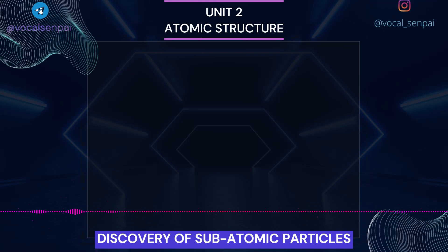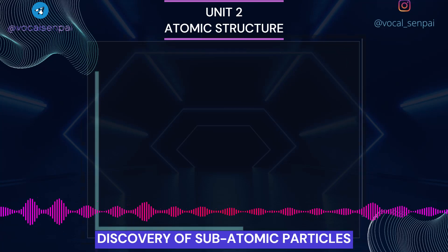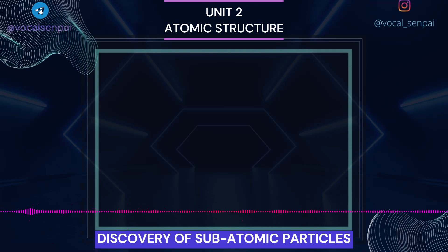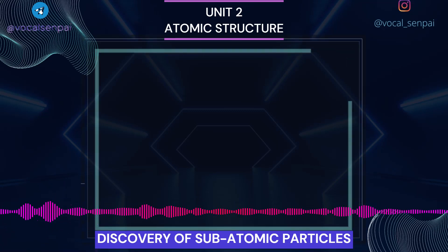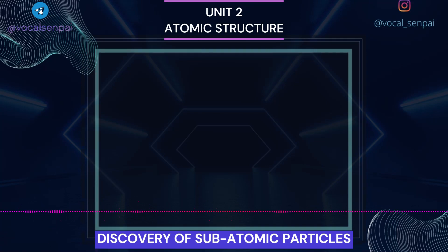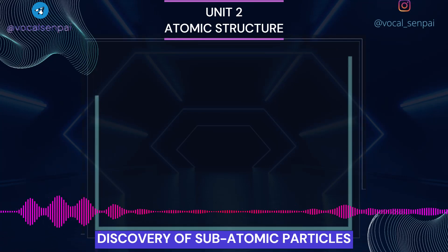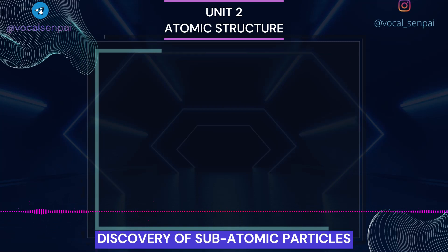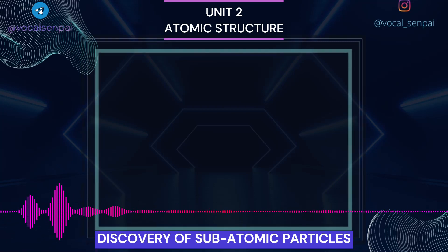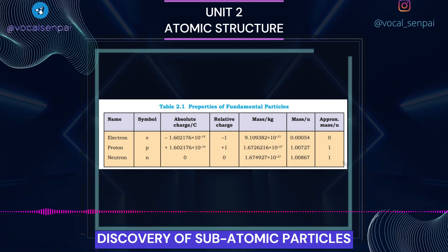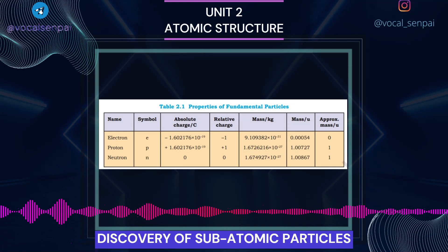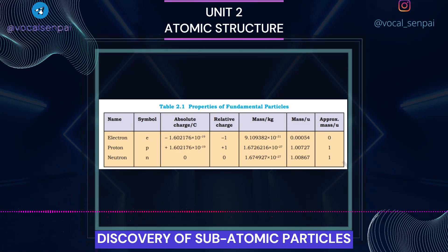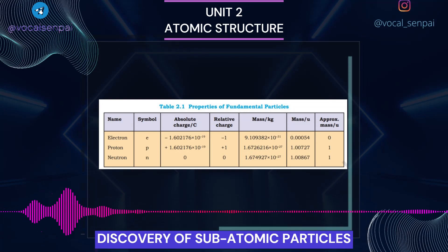The smallest and lightest positive ion was obtained from hydrogen and was called proton. This positively charged particle was characterized in 1919. Later, a need was felt for the presence of an electrically neutral particle as one of the constituents of atom. These particles were discovered by Chadwick (1932) by bombarding a thin sheet of beryllium by alpha particles. Electrically neutral particles having a mass slightly greater than that of protons were emitted. He named these particles as neutrons. The important properties of all these fundamental particles are given in Table 2.1.